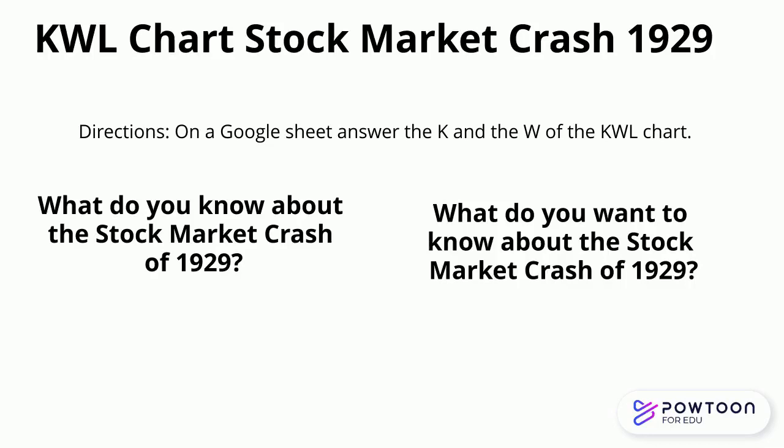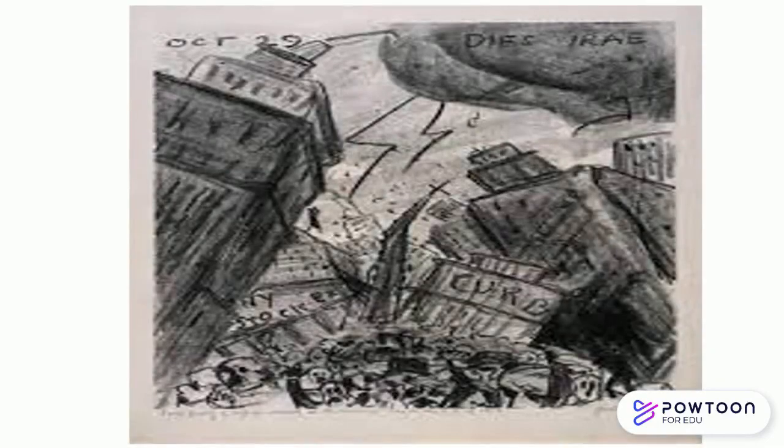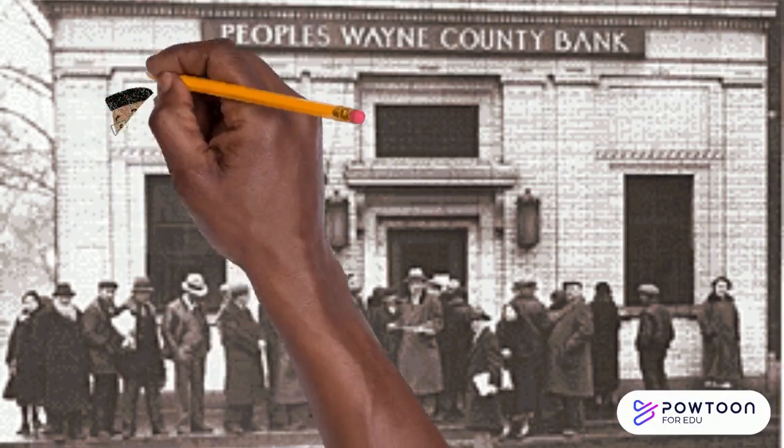Day of Wrath: After the apparent prosperity of the 1920s, few Americans were prepared for the devastating effects of the stock market crash. This cartoon by James N. Rosenberg, which shows Wall Street crumbling on October 29th, 1929, is titled "Dies Irae" — Latin for "day of wrath." Dies Irae is also the title of a sequence in the Roman Catholic mass for the dead that describes the final judgment, the end of the world.